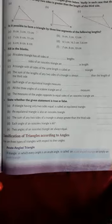Classification of triangles according to the angles. There are three types of triangles with respect to their angles. First, acute angle triangles. A triangle in which every angle is an acute angle is called an acute angle triangle.